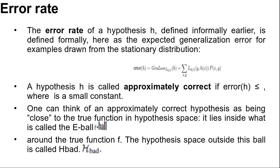The simplest PAC theorems deal with Boolean functions for which the 0 by 1 loss is appropriate, and the error rate of a hypothesis, as defined informally earlier, is defined formally here as the expected generalization error for examples drawn from the stationary distribution.